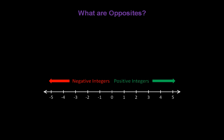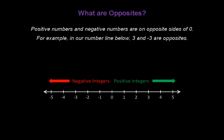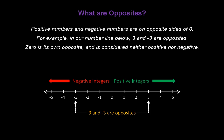Now, what are opposites? Positive numbers and negative numbers are opposites, because they're on opposite sides of 0 on a number line. For example, in our number line below, 3 and negative 3 are opposites. The number 0 is its own opposite, and is considered neither positive nor negative.